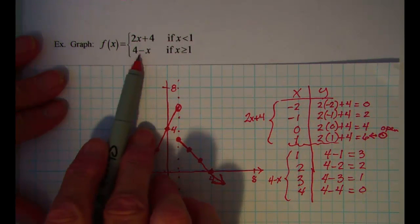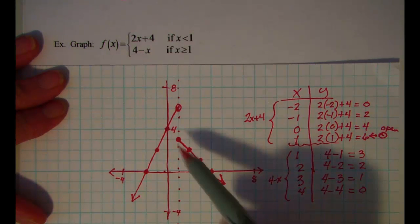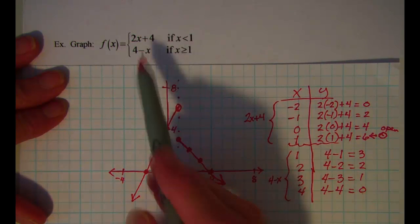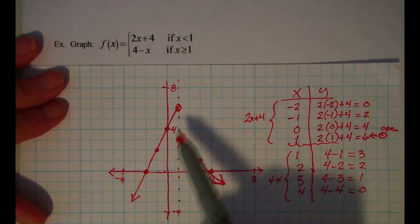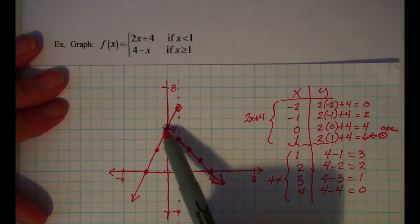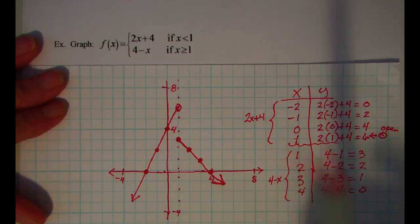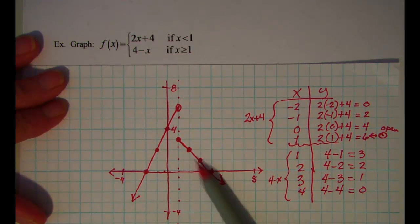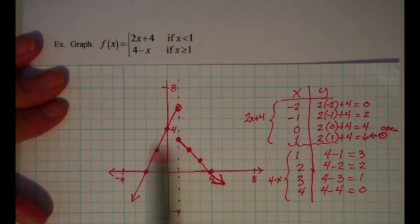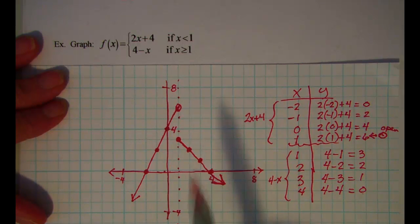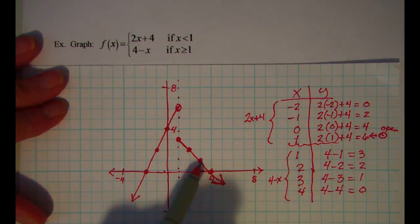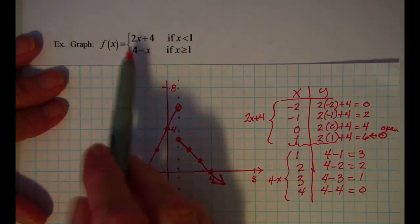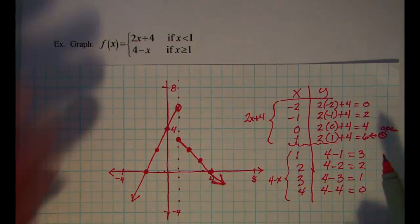Which holds true on our graph. And the y-intercept—now I can't actually come up and cross the y-axis because I'm stopped at this barrier. I can't use this bottom rule for anything less than x equals 1. But I can imagine that if this line were to continue up, that yes it would cross at 4, which is my y-intercept.